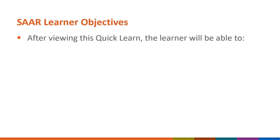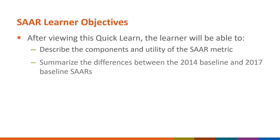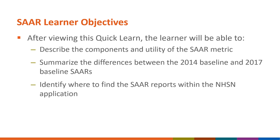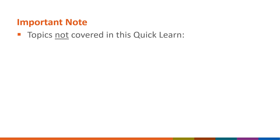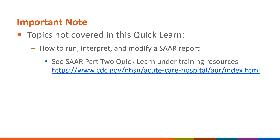After this Quick Learn, the learner will be able to describe the components and the utility of the SAR metric, summarize the differences between the 2014 baseline and 2017 baseline SARs, and identify where to find SAR reports within the NHSN application. This Quick Learn will not cover how to run, interpret, or modify a SAR report. These concepts are covered in Part 2 of this two-part series.